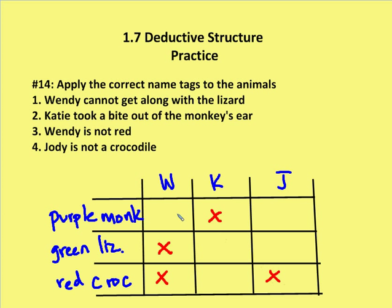If we create a table — and a lot of times it helps to graphically represent what you're doing when you create a deductive structure, either a flowchart, graph, or table — we know that Wendy must be the purple monkey. That leaves only two animals: the green lizard and the red crocodile. The red crocodile can't be Jody, so Jody must be the green lizard. If Jody is the green lizard, then Katie cannot be the green lizard, so Katie must be the red crocodile.